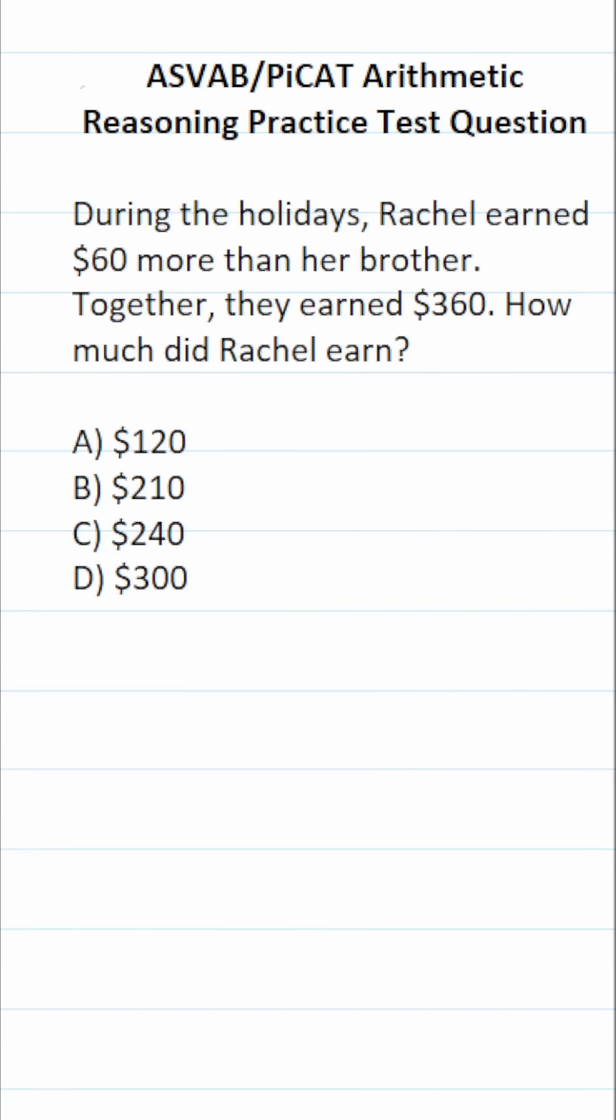This arithmetic reasoning practice test question for the ASVAB and PiCAT says, during the holidays, Rachel earned $60 more than her brother. Together, they earned $360. How much did Rachel earn?